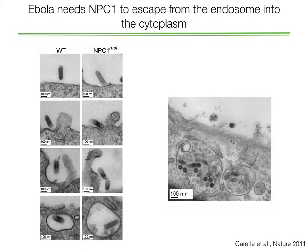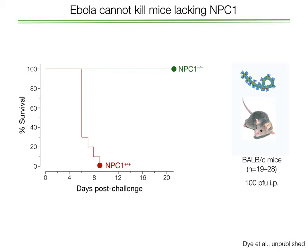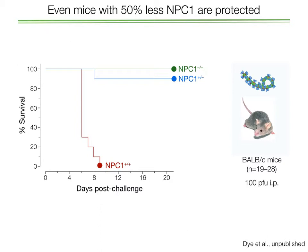This is all fine in cells, but what happens in animals? We did a series of experiments asking what happens in mice that don't have NPC1. There is a disease called Niemann-Pick disease where individuals don't express the NPC1 protein, and there are also mice with the same genetic defect. When we take normal mice and infect them with Ebola, most of them die within 8 to 10 days post-infection. However, NPC1 knockout mice — with no NPC1 whatsoever — cannot be killed by Ebola at all. Surprisingly, even mice with only one copy of NPC1, meaning half the normal amount, are substantially protected.